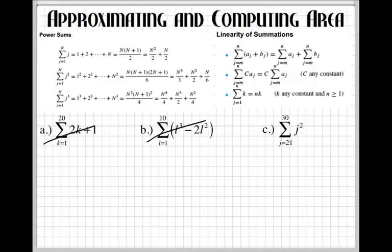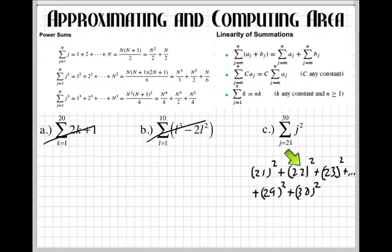It would be 21 raised to the second power plus 22 raised to the second power plus 23 raised to the second power plus dot dot dot all the way to plus 29 raised to the second power plus 30 raised to the second power. And if I had enough space here, there would be 1, 2, 3, 4, 5, 6, 7, 8, 9, 10. There would be 10 numbers starting at 21. But we need to start at 1 so that we can use a power sum. So let's do that.